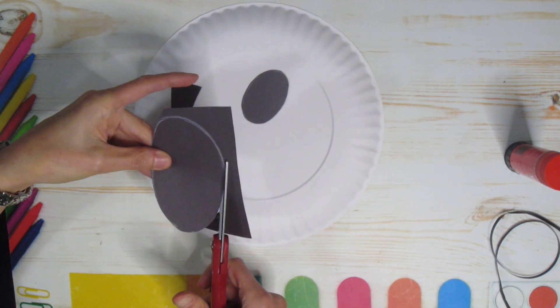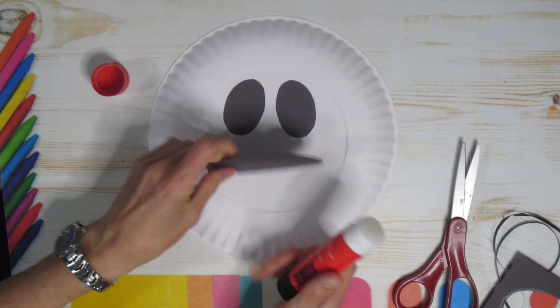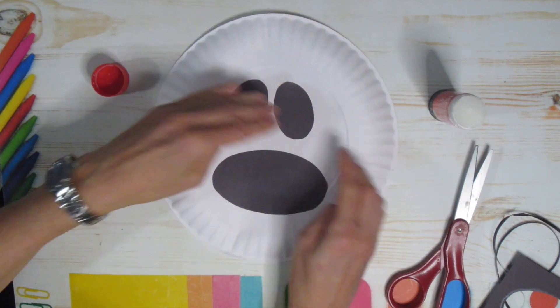You'll end up with two eyes and one mouth and you're going to grab some glue and just glue those right onto your paper plate.